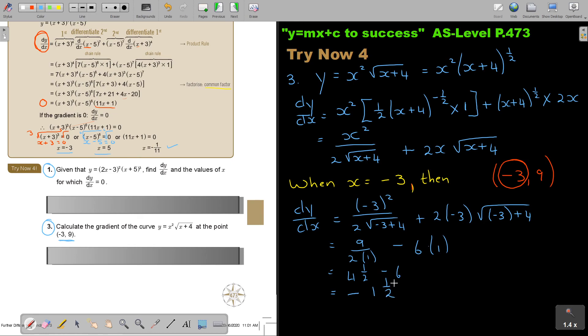And if I just move it up a little bit, that is going to give me negative 1 and a half. So let's just go back to the question. Calculate the gradient at the point. Negative 1 and a half.